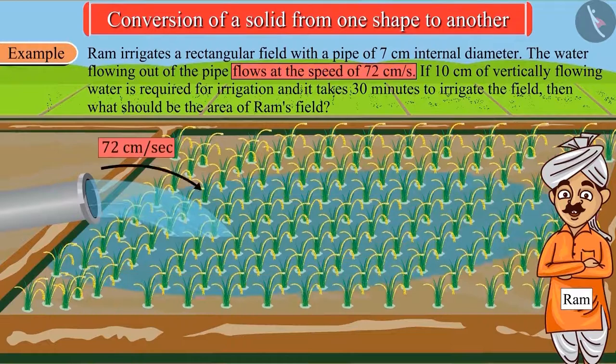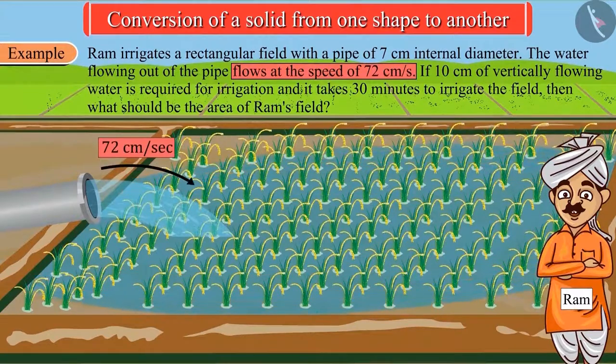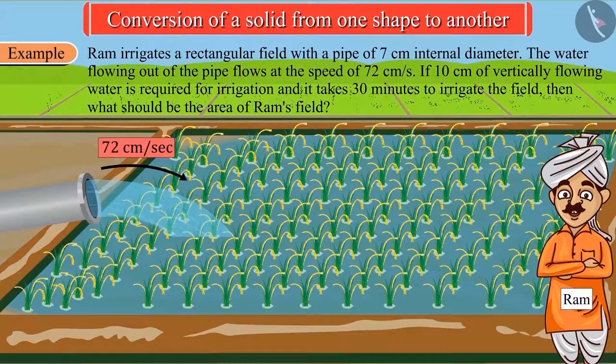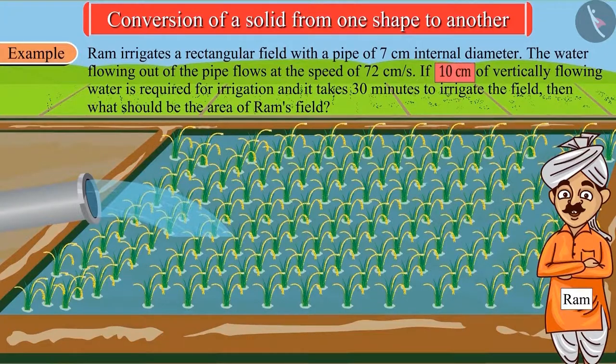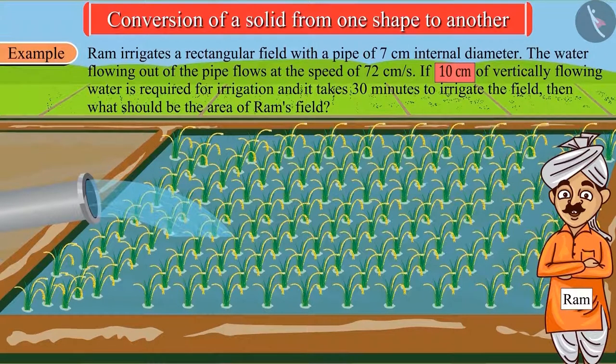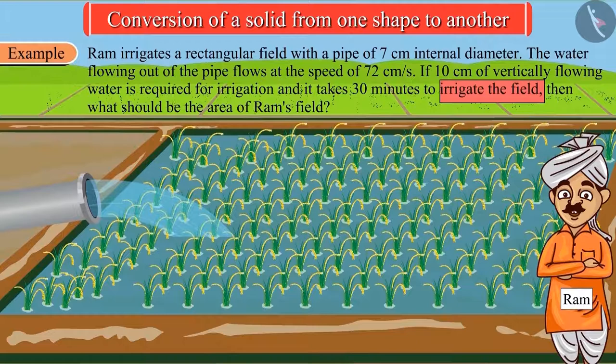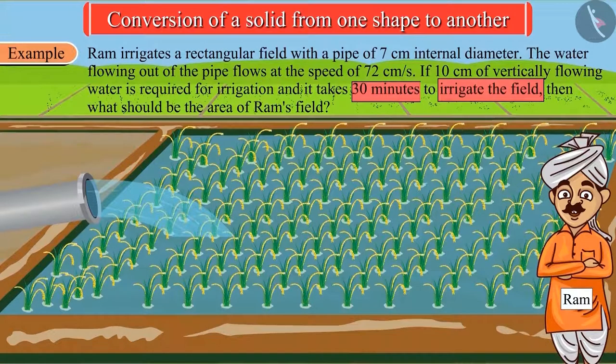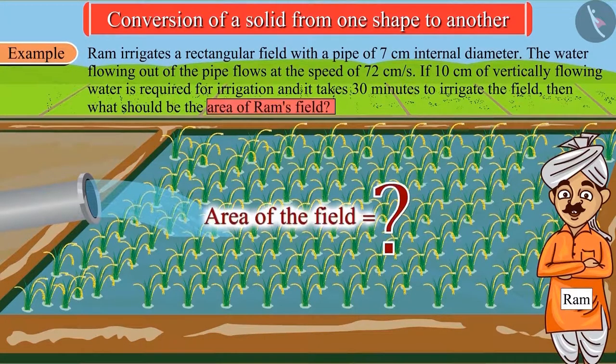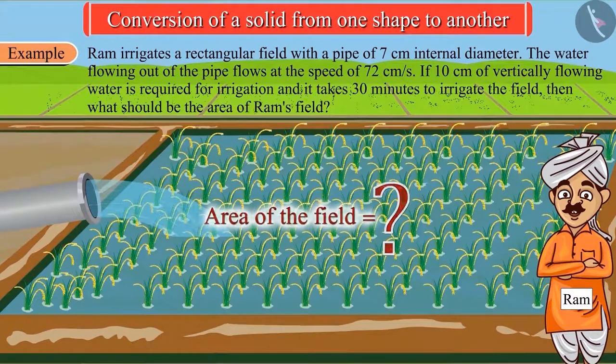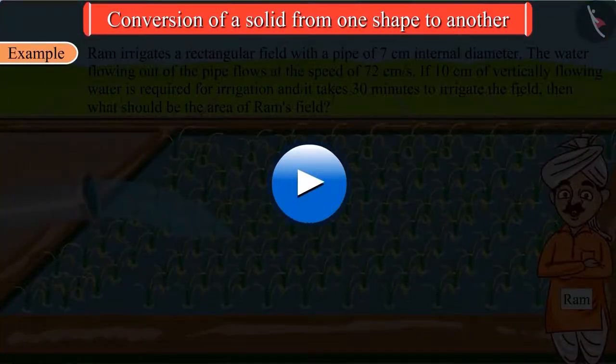The water flowing out of the pipe flows at the speed of 72 centimeters per second. If 10 centimeters of vertically flowing water is required for irrigation and it takes 30 minutes to irrigate the field, what should be the area of Ram's field? Pause the video to try yourself and then check your answer.